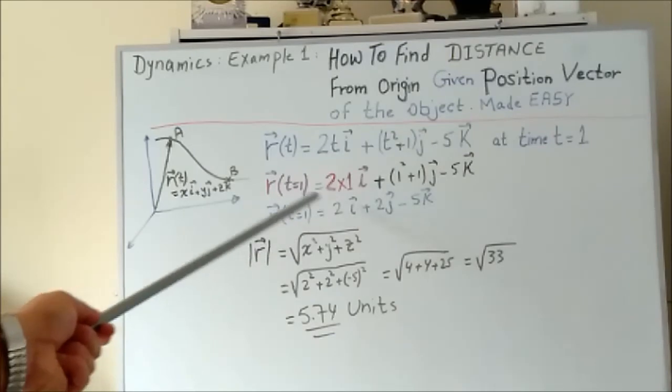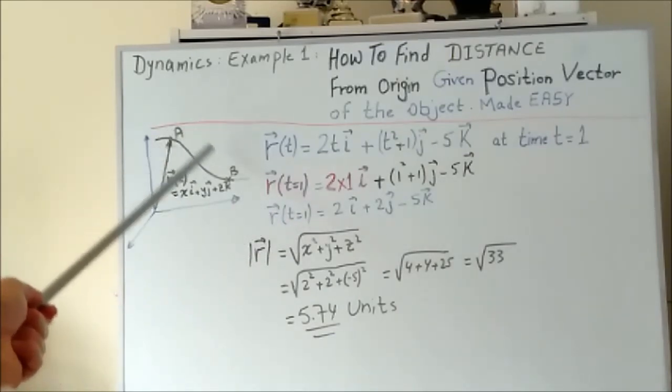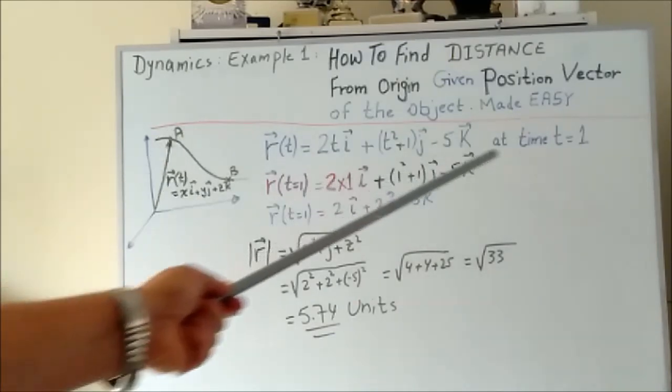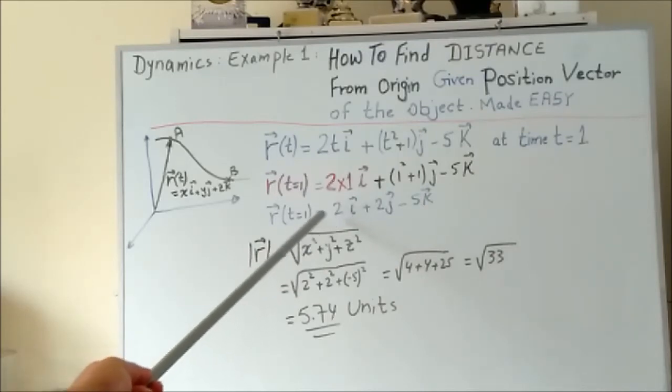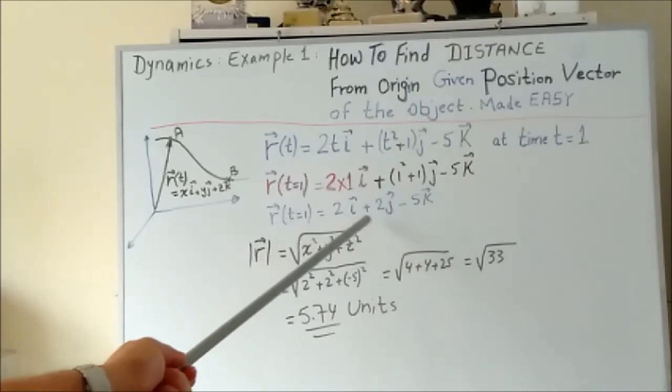So this is the position vector of point A at time t equals 1: r(1) = 2i + 2j - 5k.